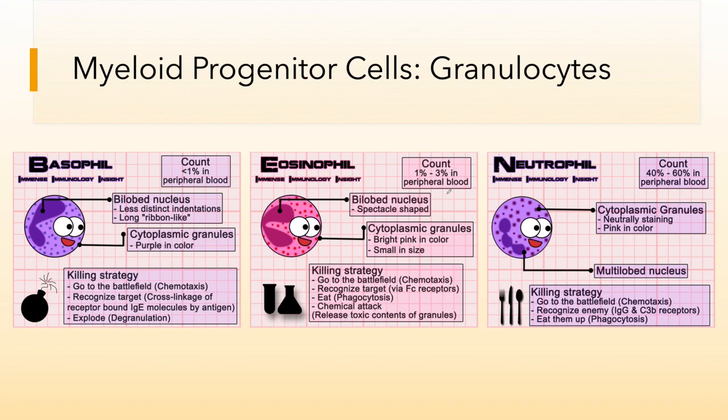Among the myeloid progenitor cells, we have first the granulocytes, which include the basophils, eosinophils, and neutrophils.